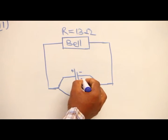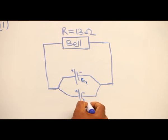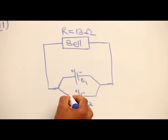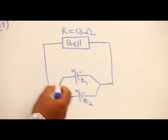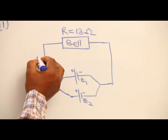This is the first cell of EMF E1. This is the second cell of EMF E2. Now we are looking for the current that is going to the bell.